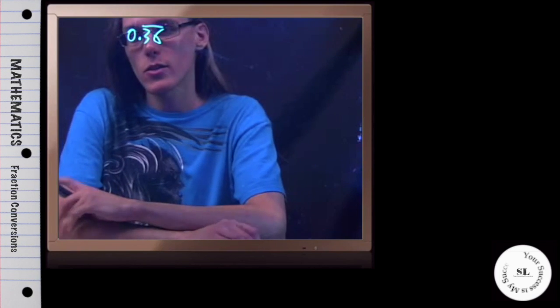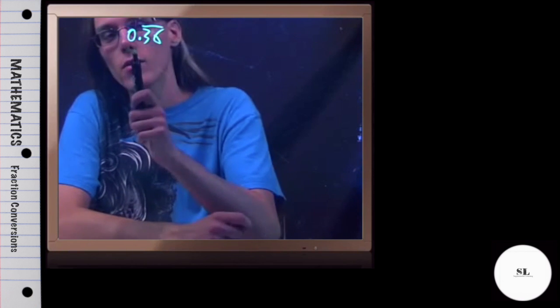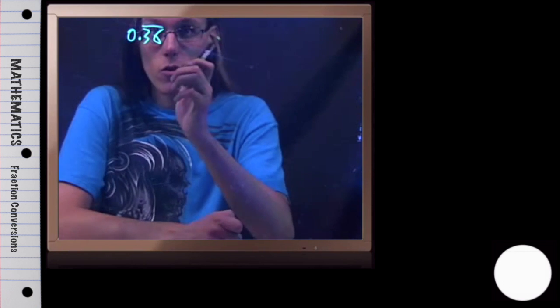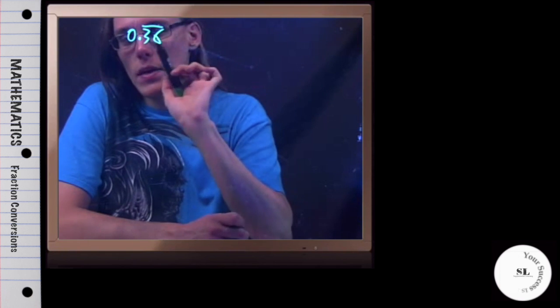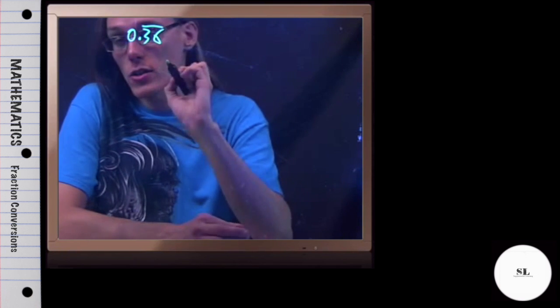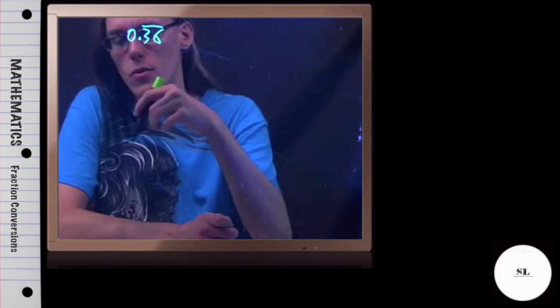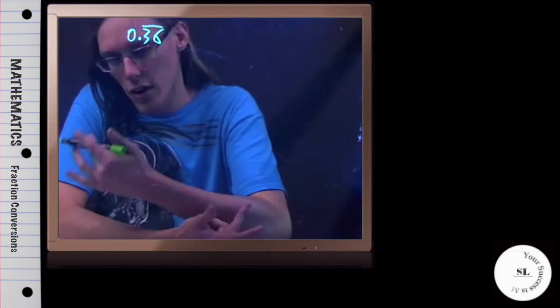Now, in this example, we're asked to express the repeating 0.363636 forever. That's what the bar represents. We're asked to express this repeating decimal as a fraction of integers in lowest terms, or quotient of integers, which means a fraction.